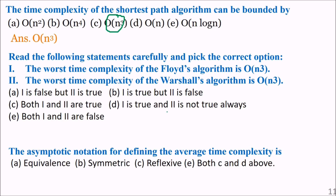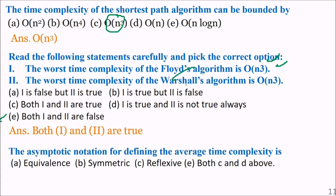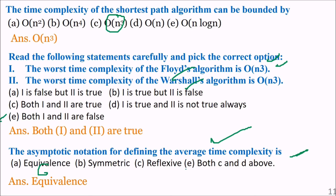The worst case time complexity of Floyd-Warshall is order of n cubed. Both the worst case complexity of Floyd-Warshall being n cubed and related statements are true. The asymptotic notion for defining average time complexity involves equivalence, which apart from being reflexive and symmetric, also requires the transitive property.